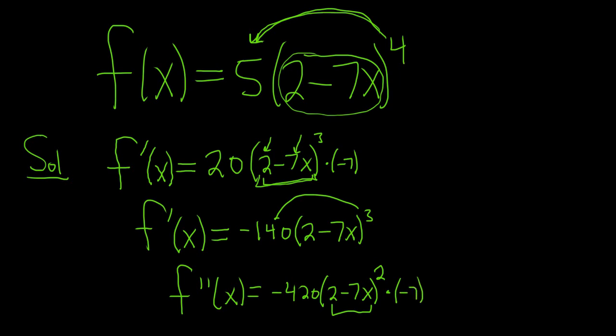All right. I'm going to put this in my calculator. Here, 7 times 420, 2940. Wow. So the second derivative of this function is going to be 2,940 parentheses 2 minus 7x parentheses squared.